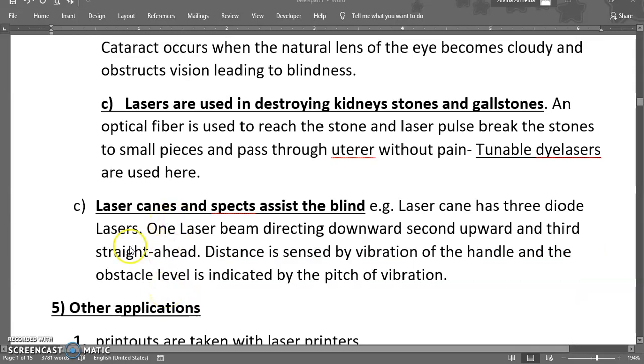Laser canes and specs assist the blind. The laser cane has three diode lasers. One laser beam directing downward, the second one upward, the third one straight ahead. The distance is sensed by vibration of the handle and the obstacle level is indicated by the feature of vibration.